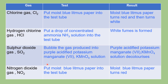The next four gases: chlorine gas, hydrogen chloride gas, sulfur dioxide, and nitrogen dioxide. For chlorine gas, put moist blue litmus paper into the test tube. The moist blue litmus paper turns red and then turns white. In the lab you may not see the red color clearly — it goes from blue straight to white. When writing the observation, state all three stages: moist blue litmus paper turns red, then turns white.